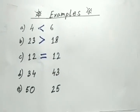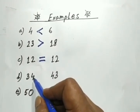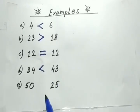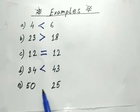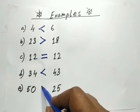34 and 43. 34 is smaller number so we are going to use less than sign. 50 and 25. 50 is bigger so we are going to use greater than sign.